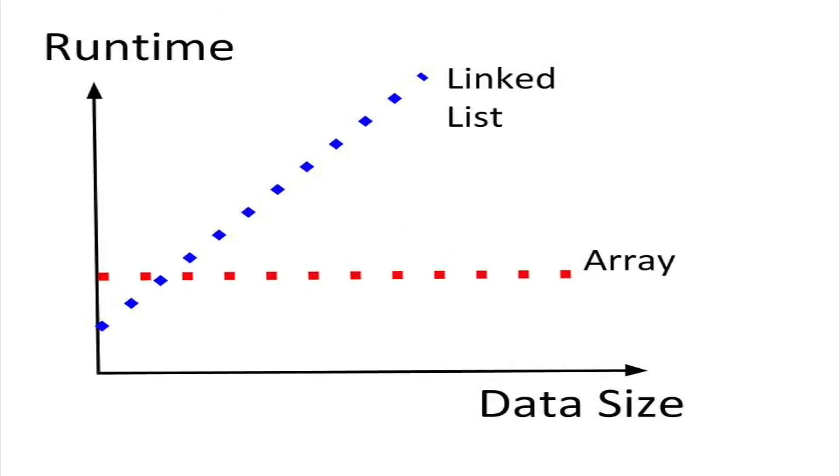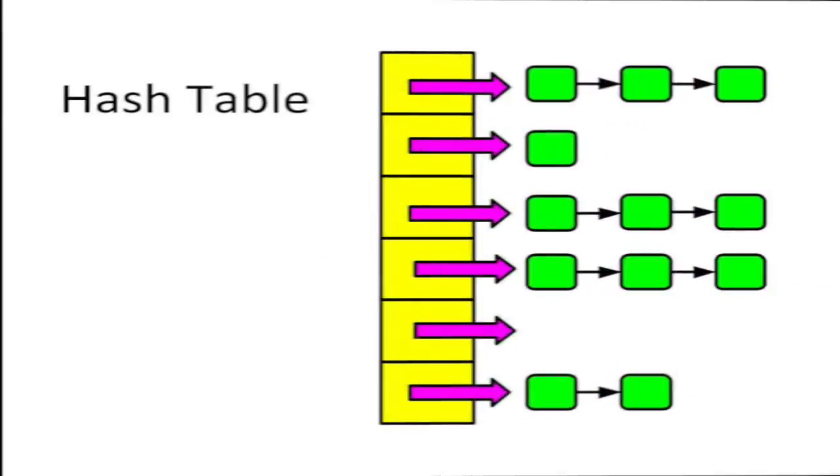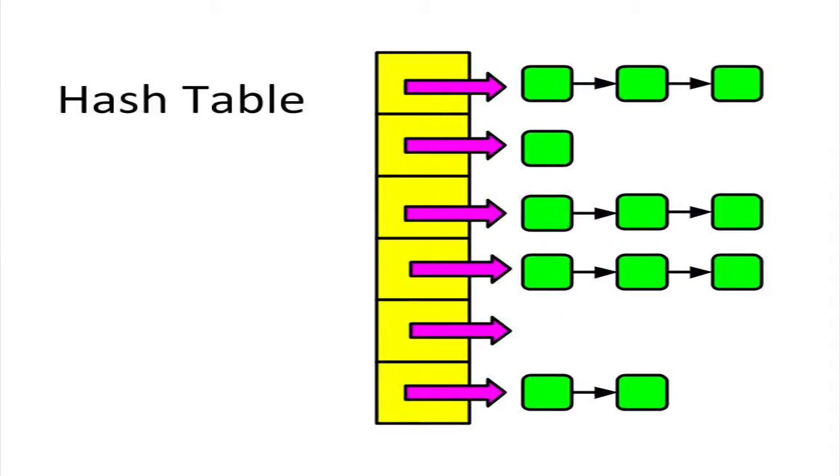So you can see that a linked list is horribly slow compared to an array. With a hash table, we get a compromise between the runtimes of an array and a linked list. To maximize the efficiency of a hash table, we need a good hash function.